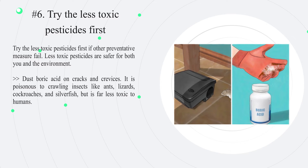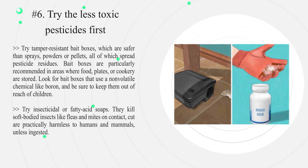Number six: try the less toxic pesticides first if other preventative measures fail. Less toxic pesticides are safer for both you and the environment. Dust boric acid on cracks and crevices — it is poisonous to crawling insects like ants, cockroaches, and silverfish, but far less toxic to humans. Try tamper-resistant bait boxes, which are safer than sprays, powders, or pellets, and are particularly recommended in areas where food, plates, or cookware are stored. Look for bait boxes that use a non-volatile chemical like boron, and keep them out of reach of children. Try insecticidal or fatty acid soaps — they kill soft-bodied insects like fleas and mites on contact but are practically harmless to humans and mammals unless ingested.